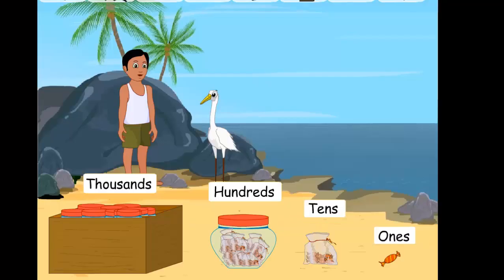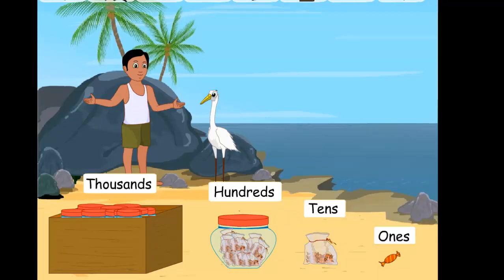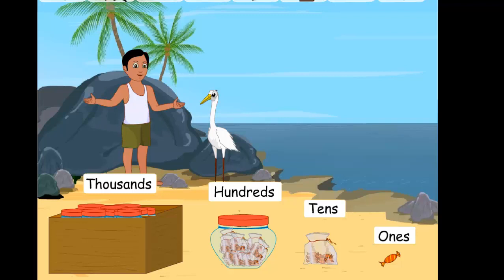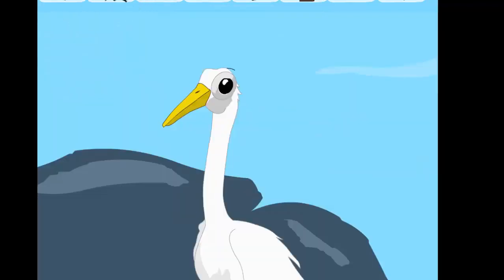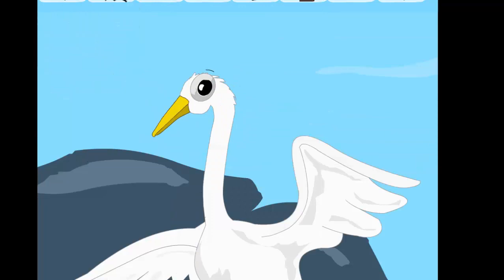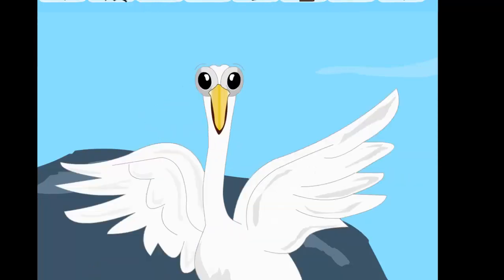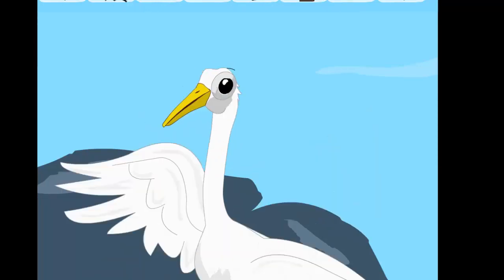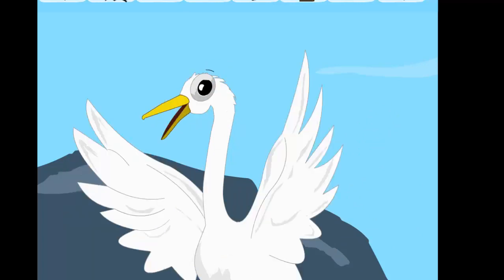I see a pattern. 10 ones make 1 ten. 10 tens make 1 hundred. And I know — 10 hundreds make 1 thousand. Wow! That is an amazing concept. You are right. Counting in 10s has made mathematics very simple. Counting and writing big numbers becomes easy when you understand place value.